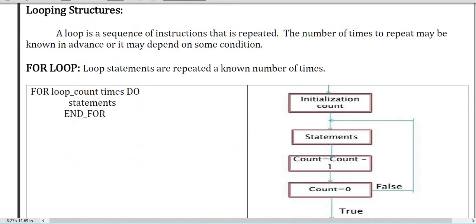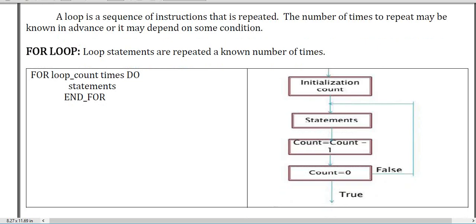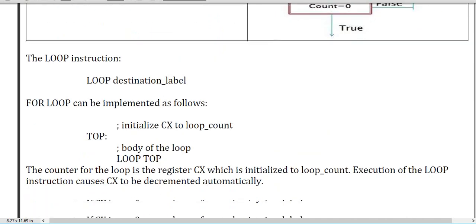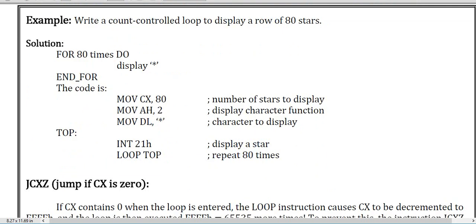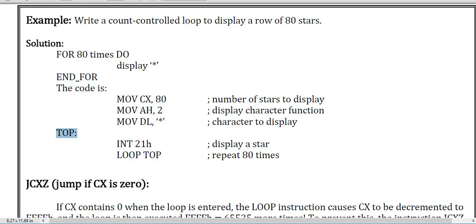Now we are in the loop section. Here we first initialize a count, then execute some statements, then increment or decrement the counter. If the condition is false go back to initialization; if true then continue. In code: we define a label 'top,' initialize and interrupt with INT 21h, and LOOP TOP repeats 80 times, going back to 'top' again and again — that is how the loop works.